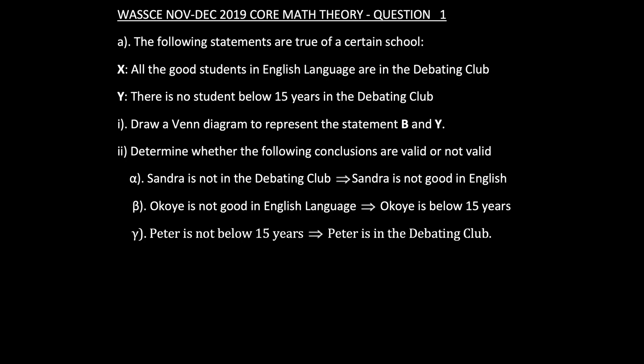Part II: Determine whether the following conclusions are valid or not valid. Alpha: Sandra is in the debating club implies that Sandra is not good in English. Beta: Okoye is not good in English language implies that Okoye is below 15 years. And Gamma: Peter is not below 15 years implies that Peter is in the debating club.